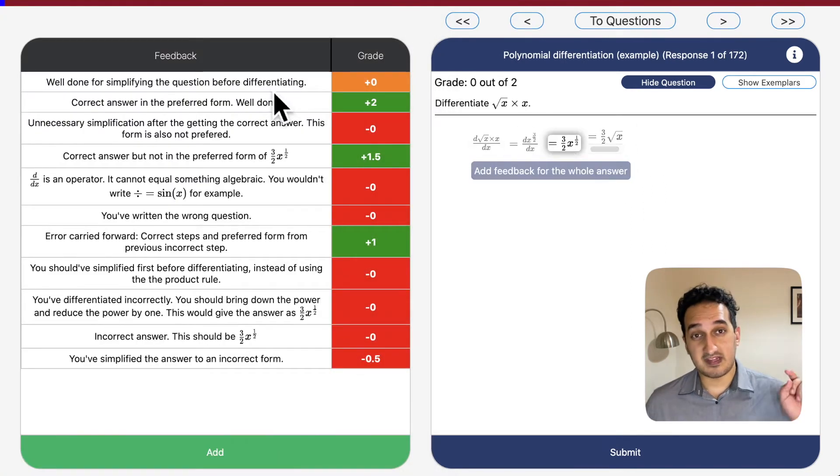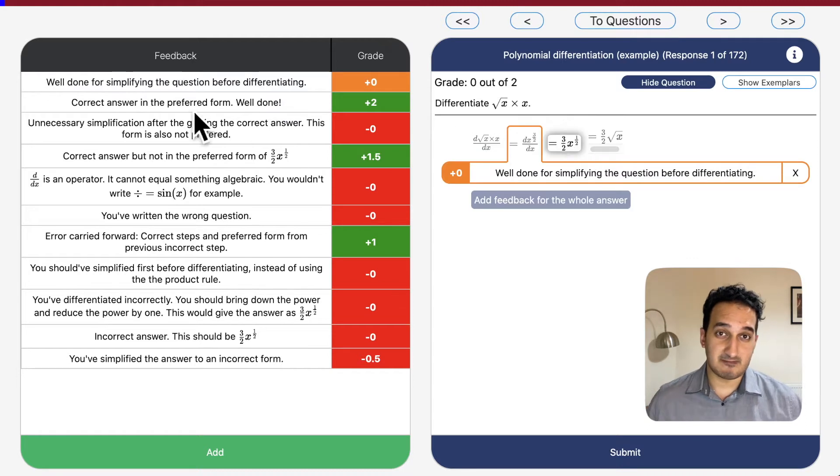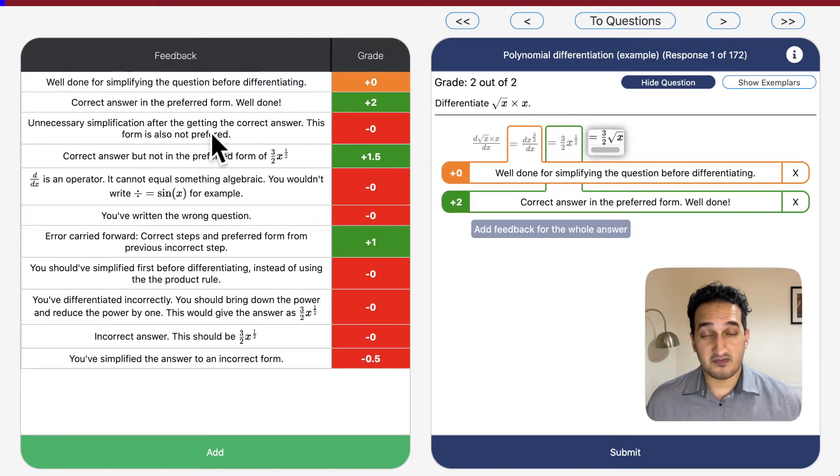To give feedback, simply click on the relevant region and then the relevant feedback and then rinse and repeat until you've graded the entire answer.